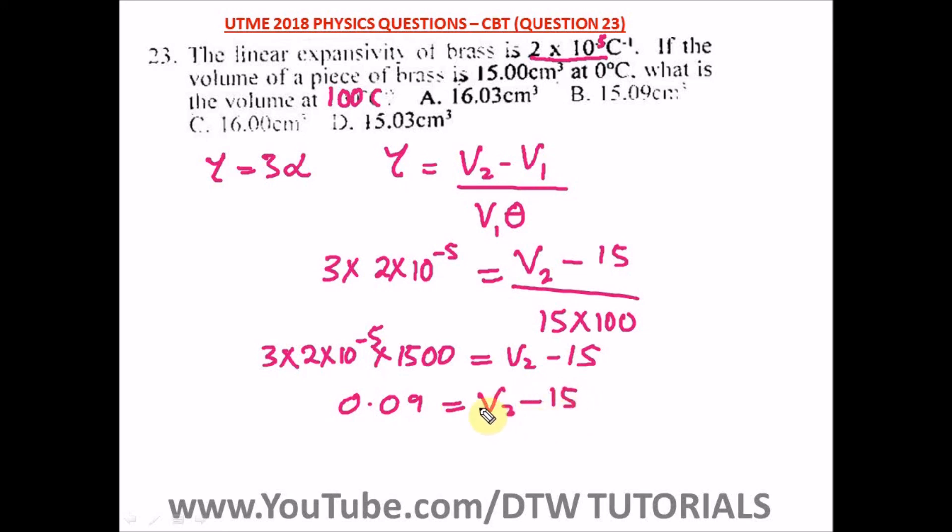Making V₂ the subject of formula, we'll take -15 to this side: 0.09 + 15. So V₂ = 15 + 0.09 = 15.09 cm³. This is our answer, our final volume, and our right option here is option B.